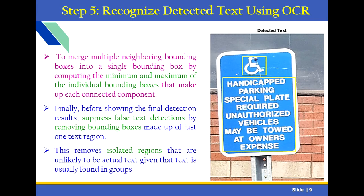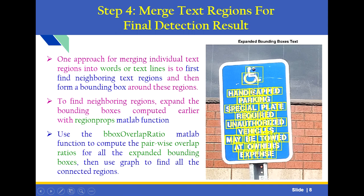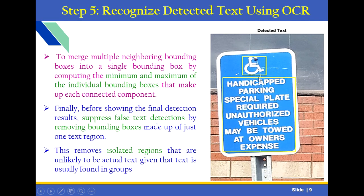Step 5: Recognize detected text using OCR. We use a function to merge multiple neighboring bounding boxes into a single bounding box. All text is considered as a single bounding box by computing the minimum and maximum of the individual bounding boxes that make up each connected component. Finally, before showing the final detection result, we suppress false detections by removing bounding boxes made of just one text region. This removes isolated regions that are unlikely to be actual text, given that text is usually found in groups.